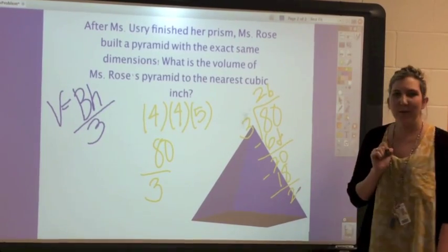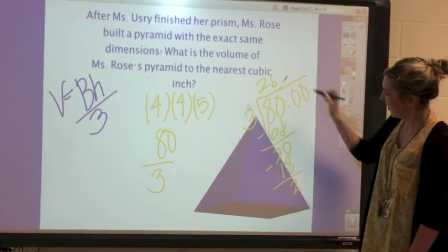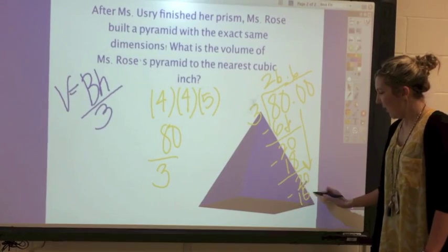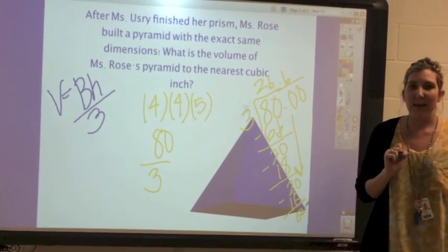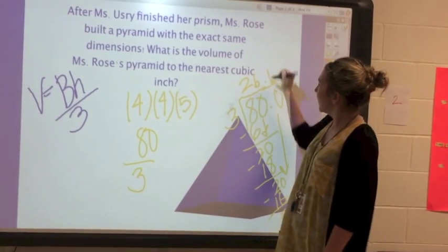What can we do? Add our decimal zeros, bring down another zero. That's six times again. And what kind of decimal do we know this is going to be? A repeating decimal, so we can put a bar over it.